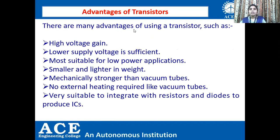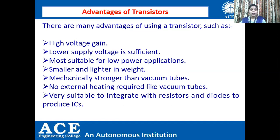Now let us see the advantages of the BJT transistor. There are many advantages: high voltage gain is achievable when using a transistor. Low power voltage is sufficient, making it more suitable for low power applications. It requires low power consumption. It is smaller and lighter in weight, which is why we can embed billions of transistors in a single chip.